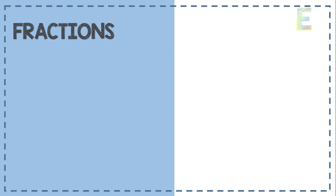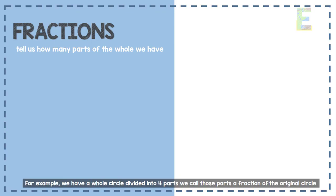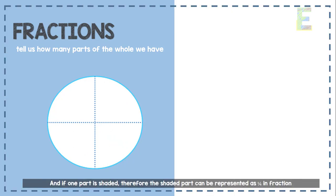Fractions simply tell us how many parts of the whole we have. For example, we have a whole circle divided into 4 parts. We call those parts a fraction of the original circle. And if one part is shaded, therefore, the shaded part can be represented as one-fourth in fraction.